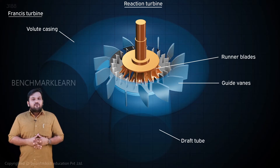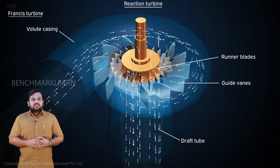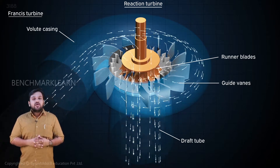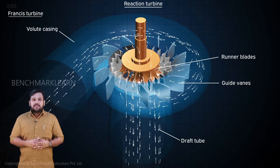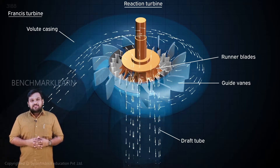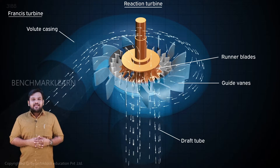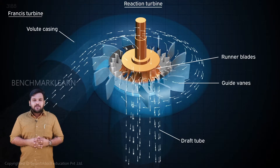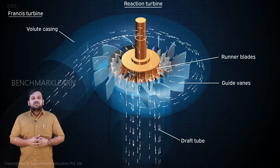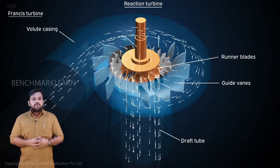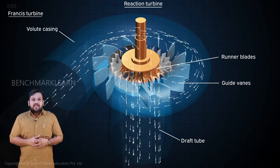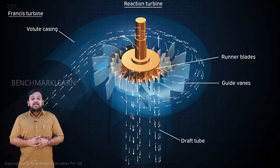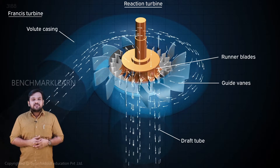From the casing, water passes through the guide vanes. The stator blades are arranged along the periphery to guide the water into the runner blades. Through the guide vanes, water enters radially into the rotor blades. The runner of the Francis turbine has a special construction, as mentioned before.